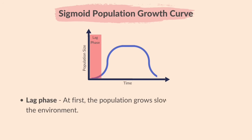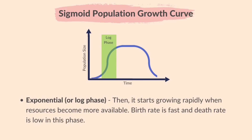In the lag phase, the population grows slowly as it adapts to the environment. In the exponential or log phase, the population starts growing rapidly when resources become more available. Birth rate is fast and death rate is low in this phase.